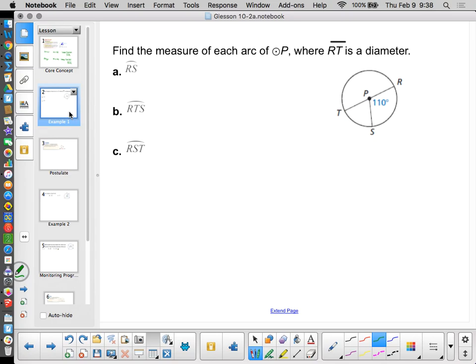Find the measure of each arc in P where RT is a diameter. So RT is a diameter of circle P. So P is the center of my circle. So I have central angles here. First, that's the measure of arc RS. Well, that's pretty straightforward. RS is this arc right here. That's a minor arc. It's going to be exactly the same as the measure of its corresponding central angle. Well, the corresponding central angle is 110, so it's 110.